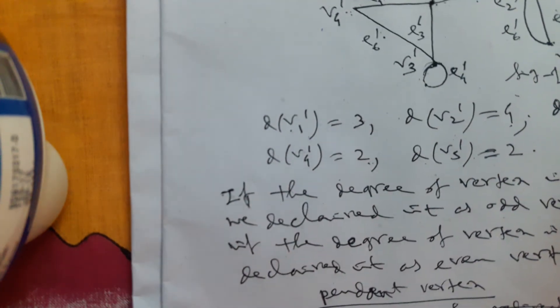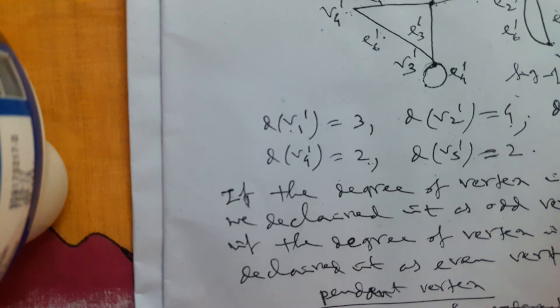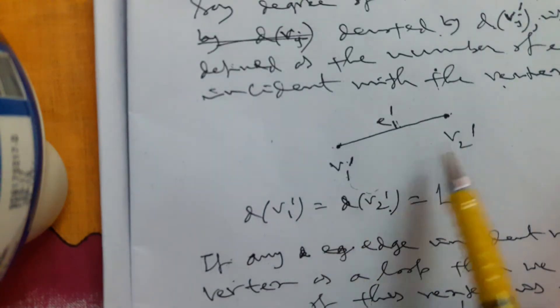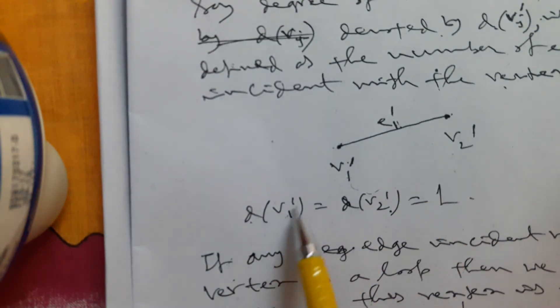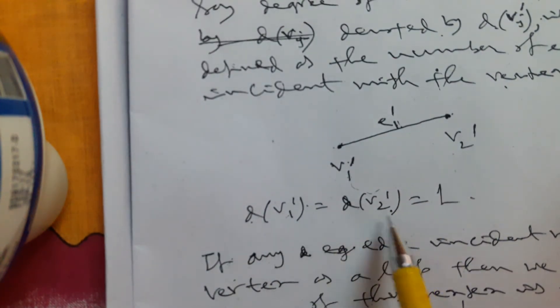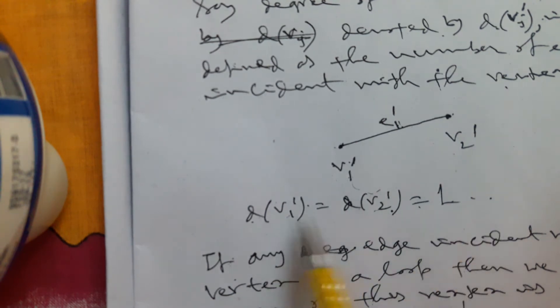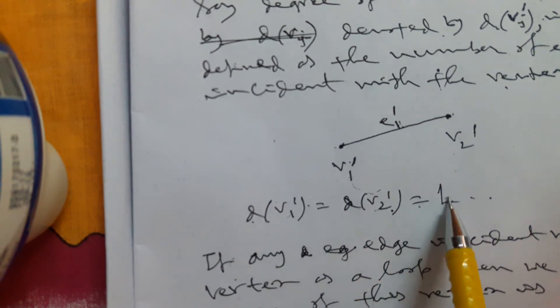Next, pendant vertex: if V_j be the vertex of graph G such that the degree of V_j is 1, then it is declared as a pendant vertex. In the earlier figure, D of V_1 and D of V_2 is 1, so these two are pendant vertices.